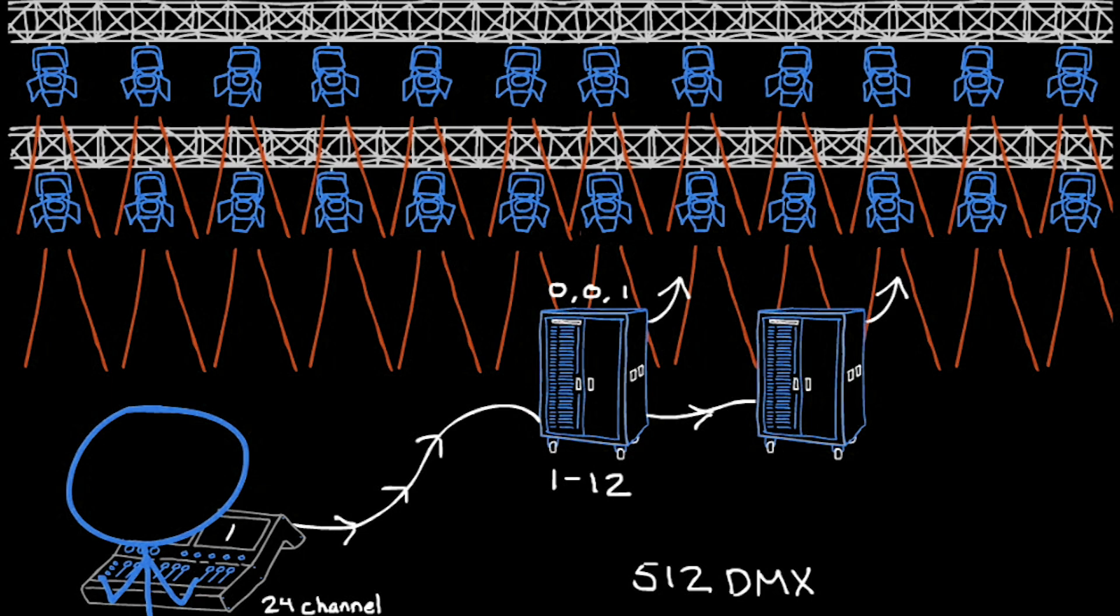The theater decides to buy a 24-channel lighting console. What we can do is dial the second dimmer, 0, 1, 3. Now this dimmer is 13 through 24. This is DMX in its simplest form.